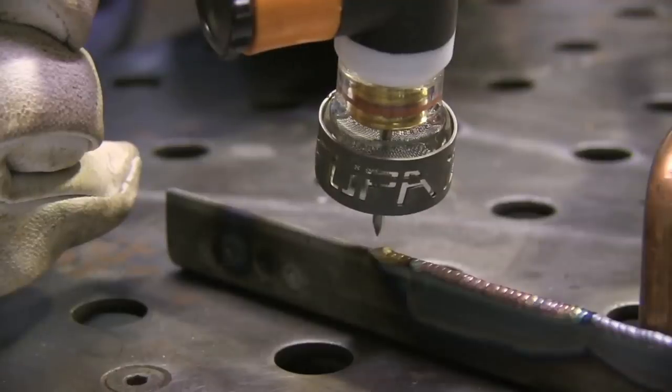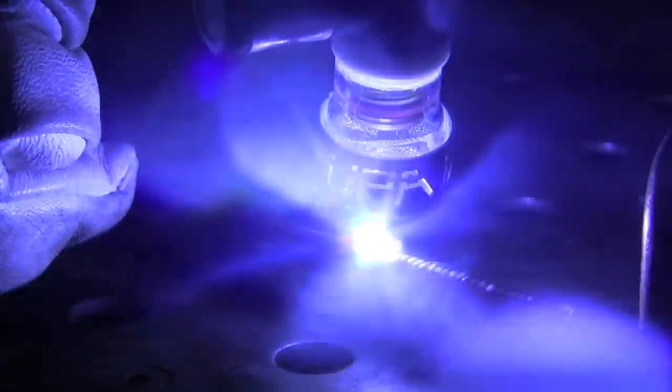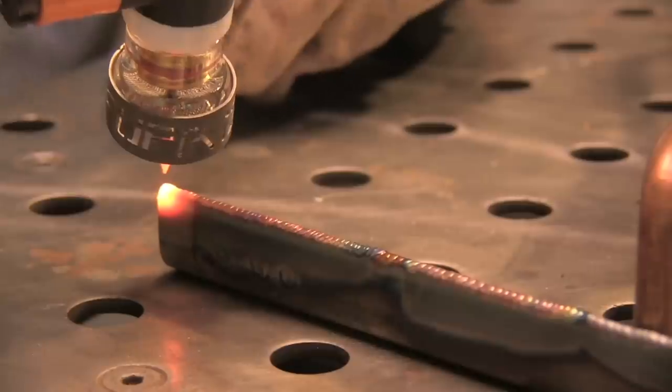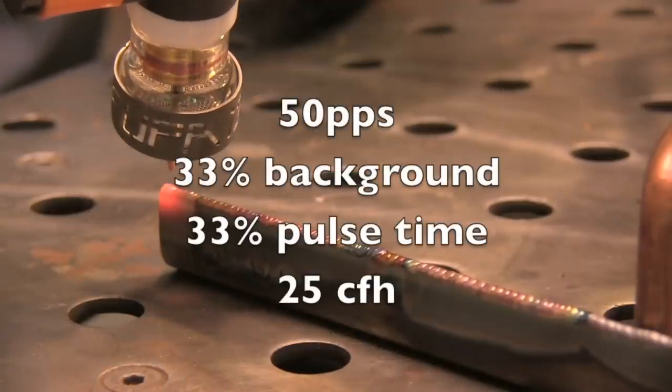They shield great and where you really need great shielding is on an edge weld like this where the edge kind of splits the gas anyway and you can get really poor coverage. It's especially important when you're making multiple passes because you want every pass to be oxide free so the next pass goes on there. This was done with 50 pulses a second and 25 CFH.